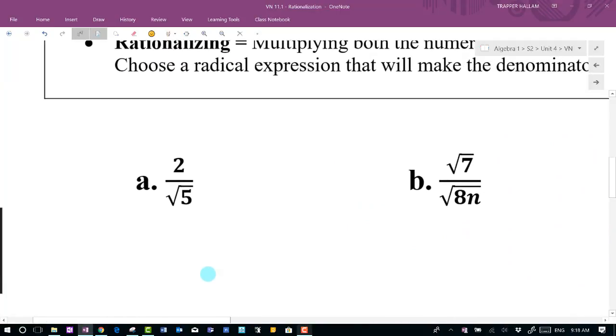So here we have example a, which has a radical in the bottom where the radicand, again the number underneath the radical, does not have another perfect square term. Five is a prime, so we can't do anything with that. Here's how we address it.